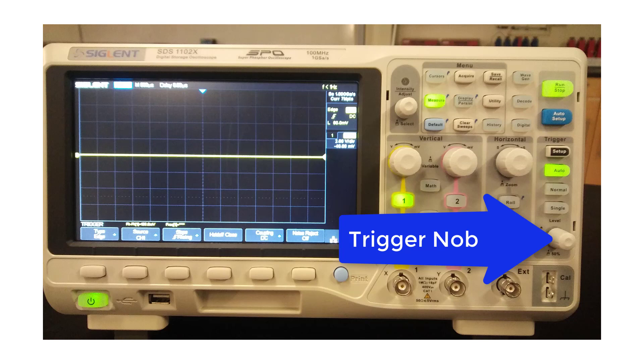At this point you should see a signal of some sort on your oscilloscope. If you don't, try adjusting the trigger knob and if that doesn't work, call your instructor over.